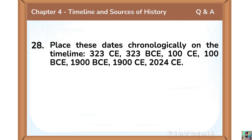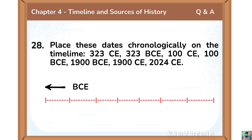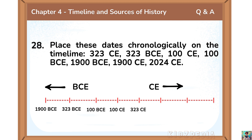Place these dates chronologically on the timeline: 323 CE, 323 BCE, 100 CE, 100 BCE, 1900 BCE, 1900 CE, 2024 CE. BCE counts backwards, so we write the biggest BCE first: 1900 BCE, then 323 BCE, then 100 BCE. After that they move into CE, which counts forward, starting with 100 CE, then 323 CE, then 1900 CE, and finally 2024 CE.